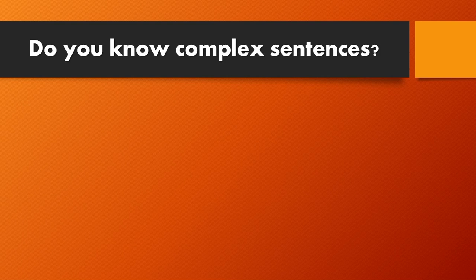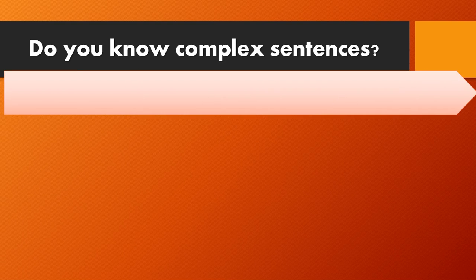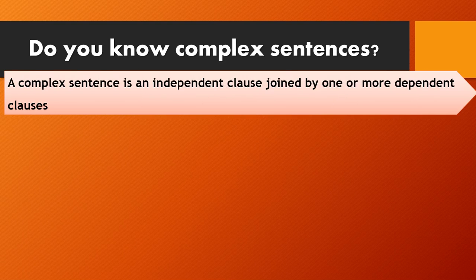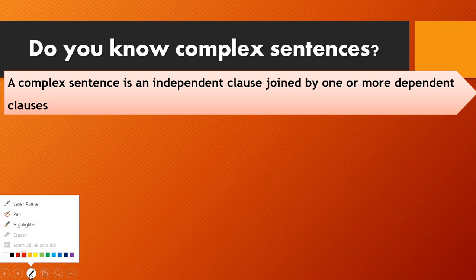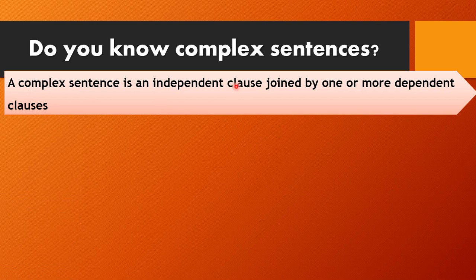Welcome back. This is our third session in sentence structure, and today we are going to speak about the complex sentence. The complex sentence is a sentence that has an independent clause joined with a dependent one — an independent clause joined by one or more dependent clauses. It must have an independent clause and at least one dependent clause, or it can have more than that.